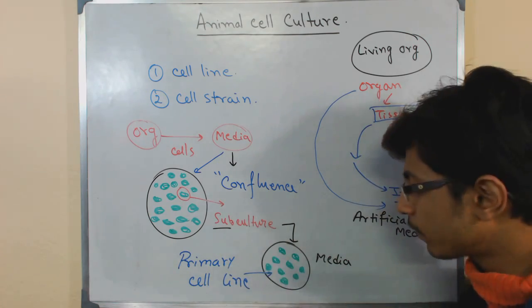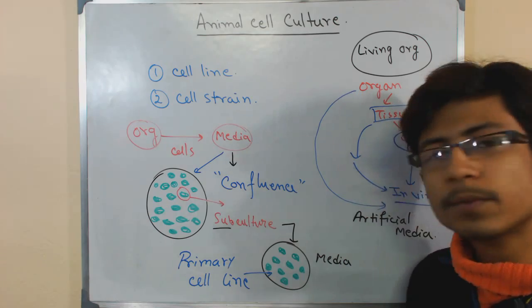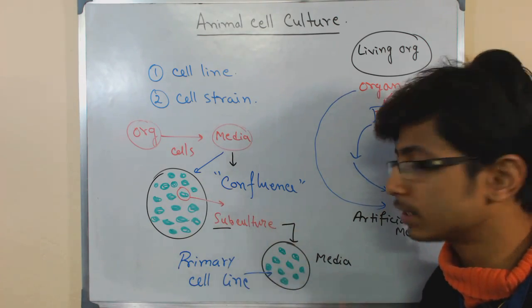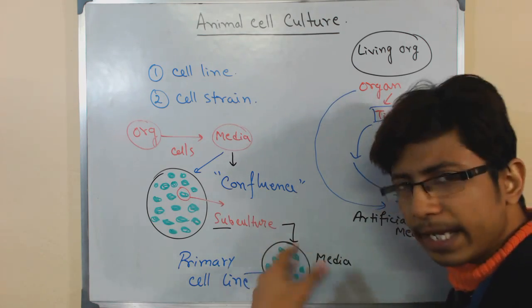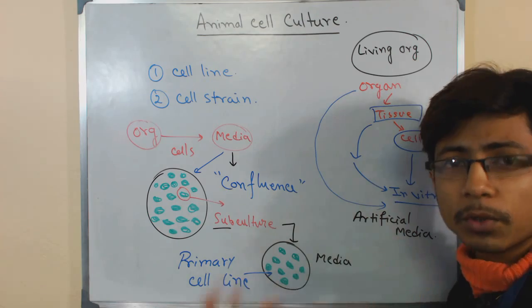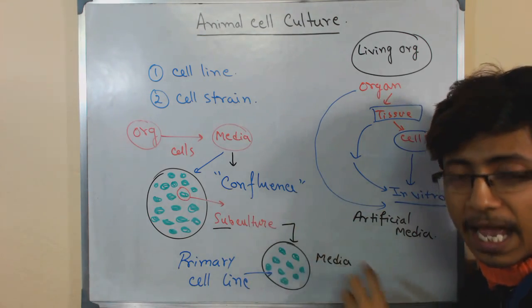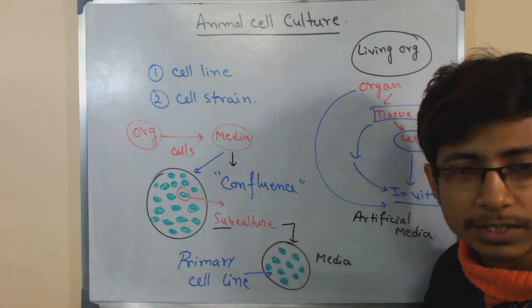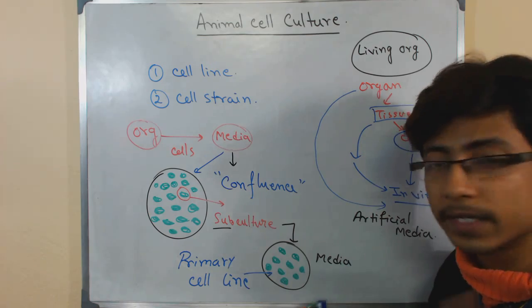From this primary cell line, sometimes what happens during the subculture process: if the media in the second culture is depleted and we again want the cell to grow further, we take the cell and put it into another media. At that time, that culture is termed secondary culture or secondary cell line. That is how cell lines are generated.